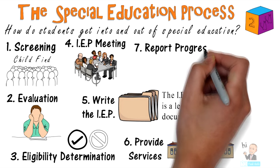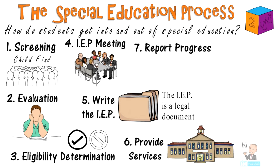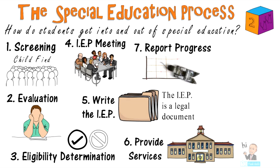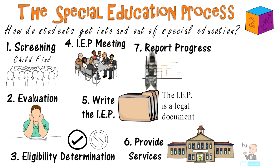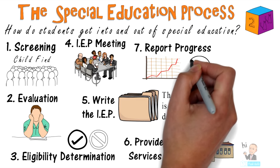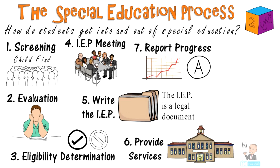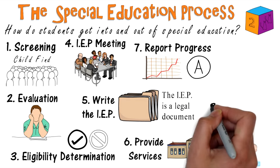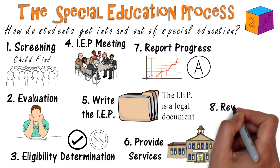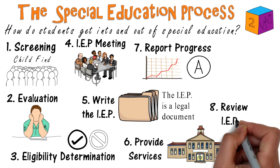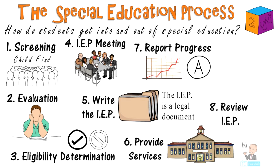Number seven is to report progress. Progress reports must be sent out as often as for non-disabled students. Number eight is the review of the IEP. The IEP is reviewed at the very least one time a year. Parents are invited to review meetings where the IEP can be amended.